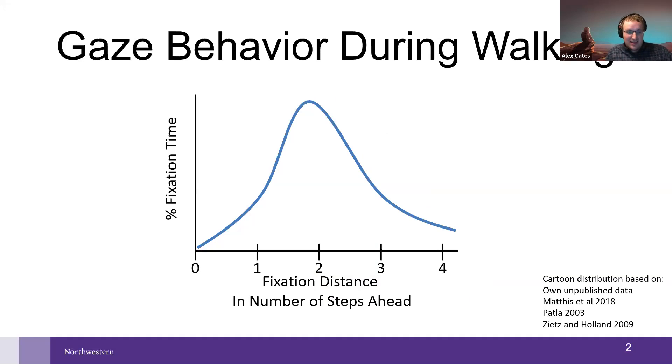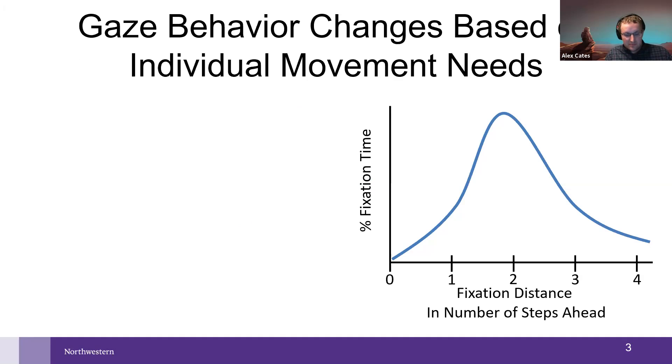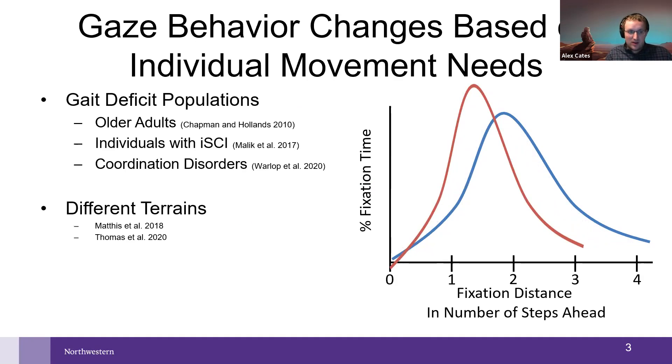I mentioned that you normally show it as a distribution. During walking, we tend to normalize this into the number of steps ahead someone is looking. When someone's walking on normal ground, they might have a few obstacles, you can imagine walking on the street or something like that. They'll be looking at a couple different things, but there tends to be a distribution centered around two steps ahead. That tends to be a pretty standard thing in healthy adults. In clinical populations or on different terrains, we see a shifted distribution where people tend to look a little closer to themselves. The fixation distance decreases—they are emphasizing fixations that are closer to where their feet are going to land. So they're not planning as far ahead.